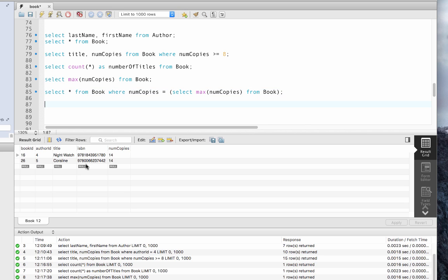We can also find out how many copies of each book we have on average, as well as the total number of copies of all books in our library.